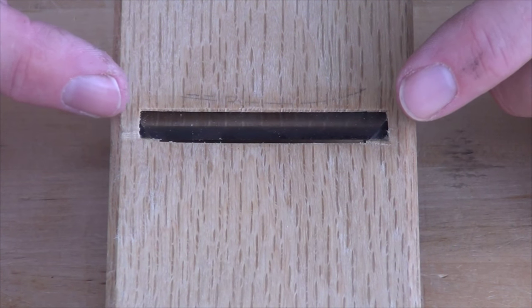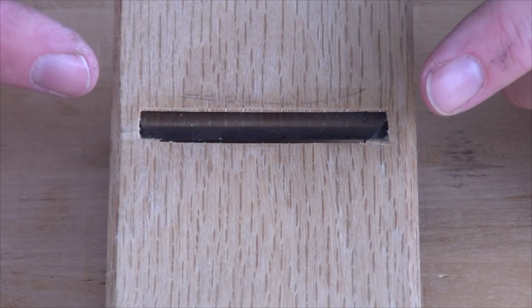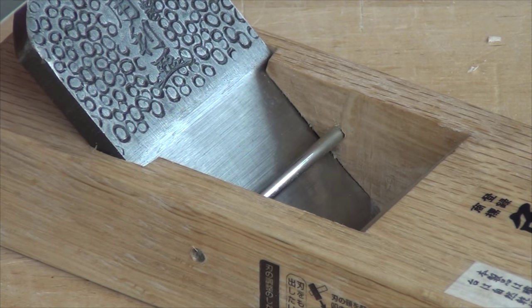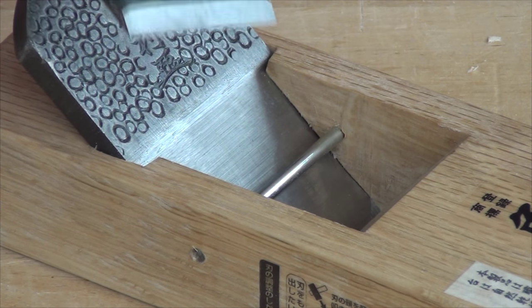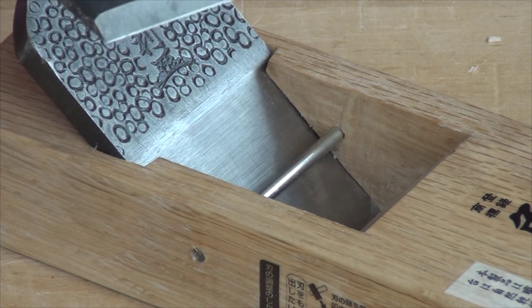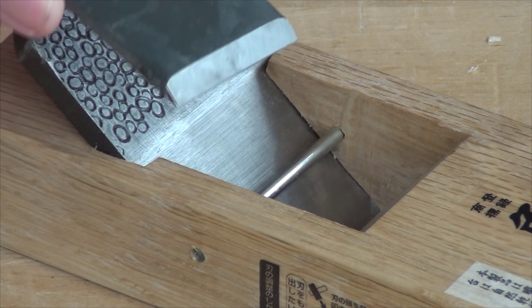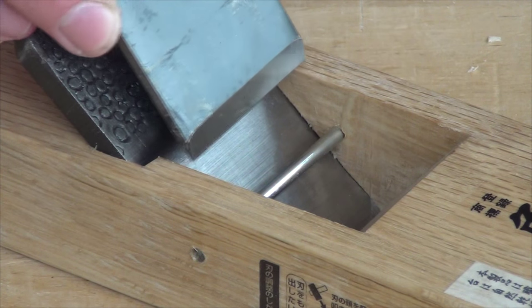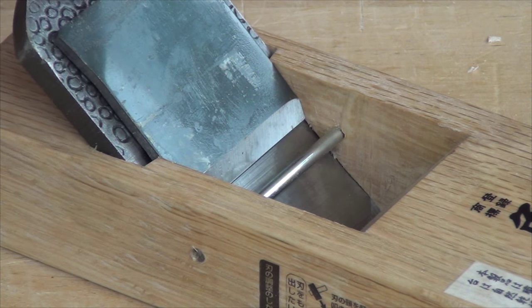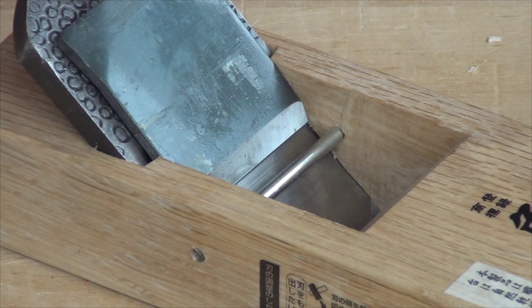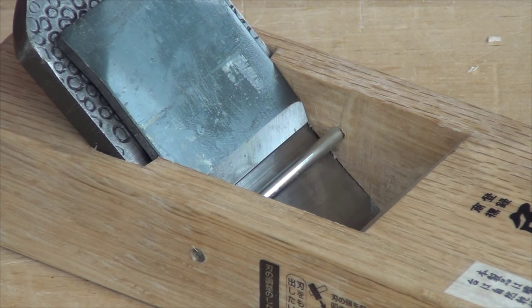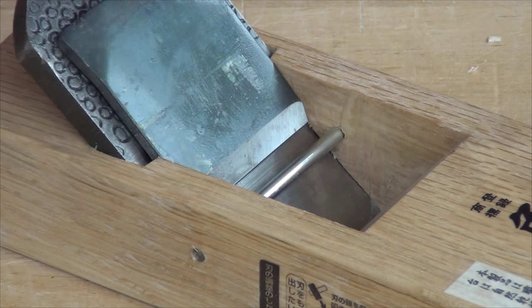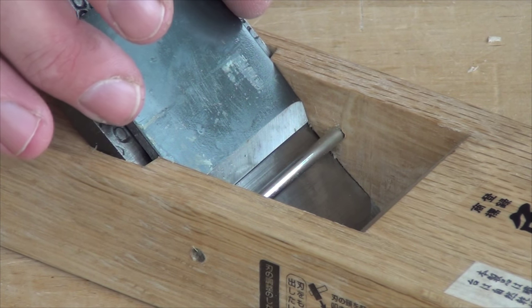So the next thing I'm going to do is turn my attention to the chip breaker. You don't need to use a chip breaker on these planes, but as with the Western chip breakers, they do help with difficult woods to avoid tear out. Now the chip breaker should just slide in there underneath the little peg, but this is far too tight. So I'm going to have to relieve a bit of pressure either on the sides of the plane or just take a little bit off each side of the chip breaker itself.